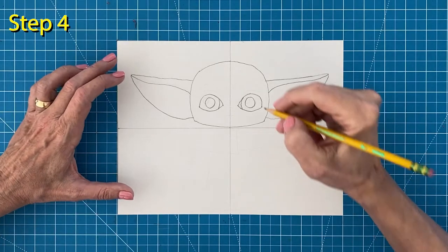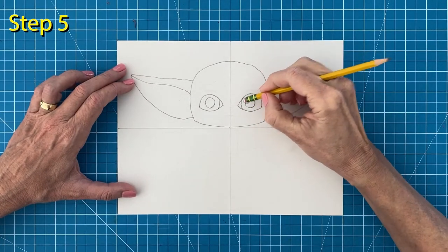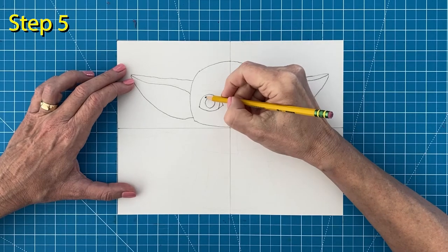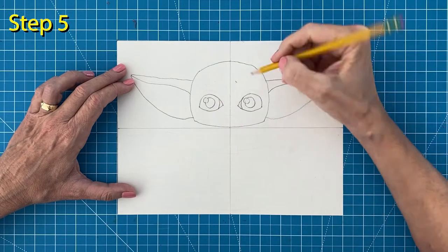Step number five, add the small highlight circle spots in the eyes. Erase the lines inside and draw the wrinkle lines above each eye.